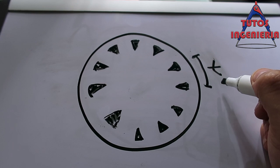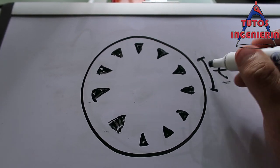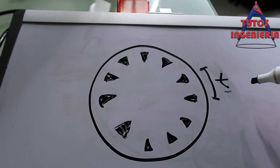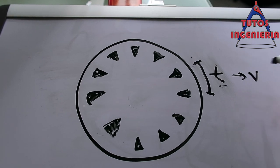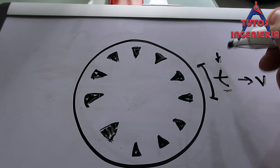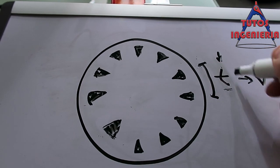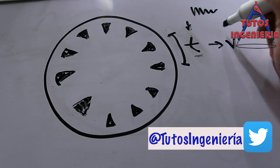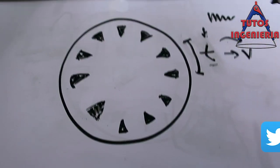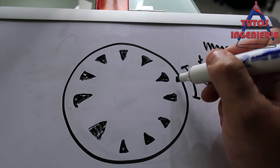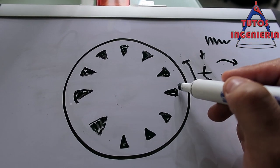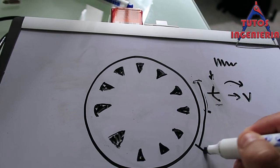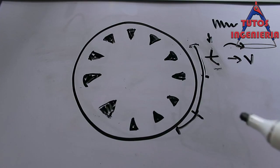The encoder calculates the time between ticks. As we discussed in the last videos, this time is used to calculate the velocity. However, this time has some variations and that introduces a lot of noise, and that noise goes into the velocity signal.